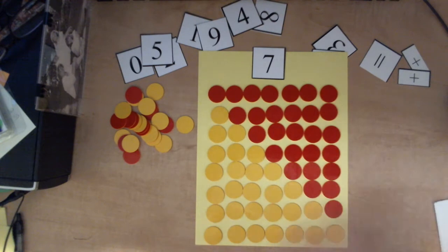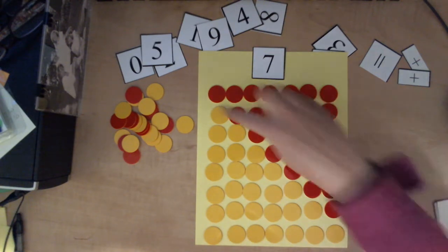So after a child has come up with as many combinations as they can, then you would ask them, well, what do you notice? Well, they might say down here at the bottom, they're all yellow and up here at the top.